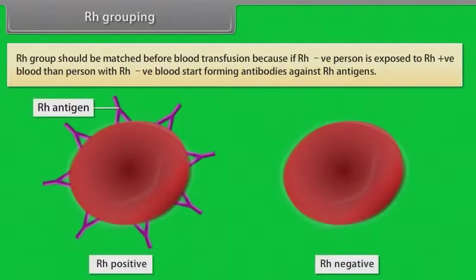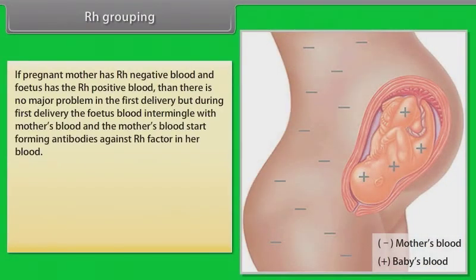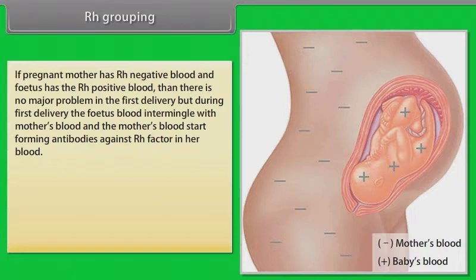RH group should be matched before blood transfusion because if an RH negative person is exposed to RH positive blood, they begin forming antibodies against RH antigens. If a pregnant mother has RH negative blood and the fetus has RH positive blood, there is no major problem in the first delivery. However, during the first delivery, fetal blood intermingles with the mother's blood, causing her to form antibodies against the RH factor.